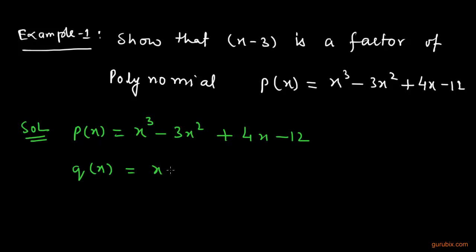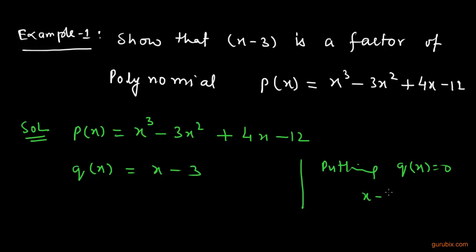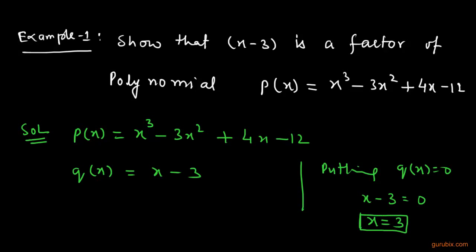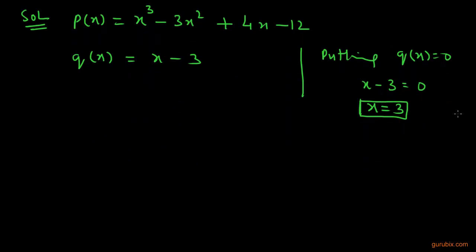We let q(x) equal (x minus 3), which is another polynomial. Now we put q(x) equal to 0 to find the value of x: x minus 3 equals 0, which gives x equals 3.